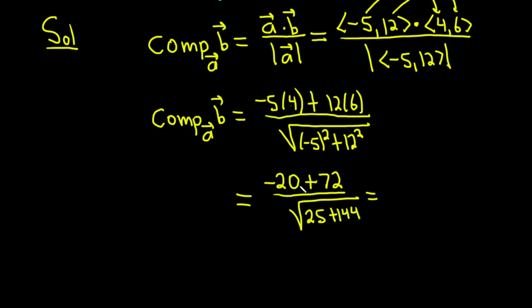This equals negative 20 plus 72, which is 52, over the square root of 169. That's 52 over the square root of 169 which is 13. 52 over 13 is 4. The answer is 4.